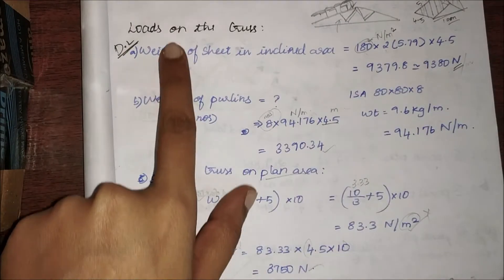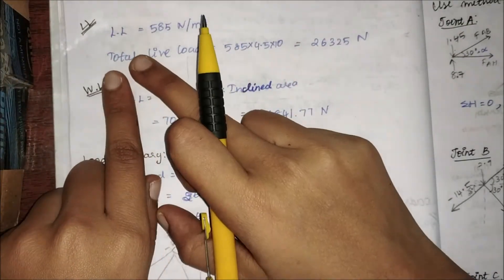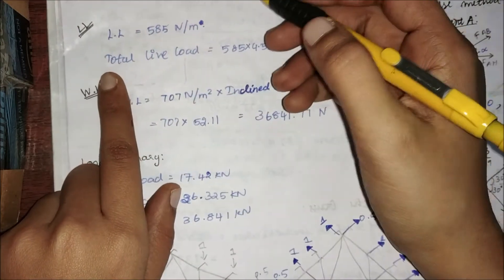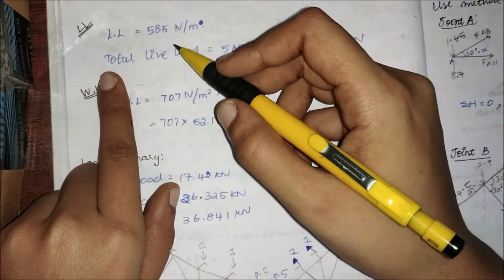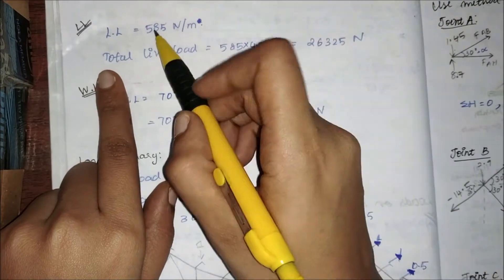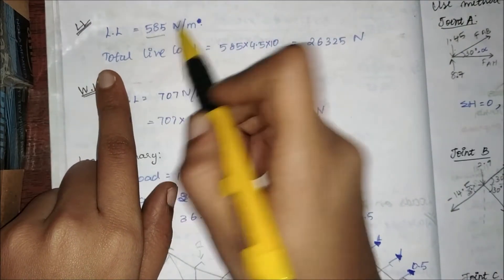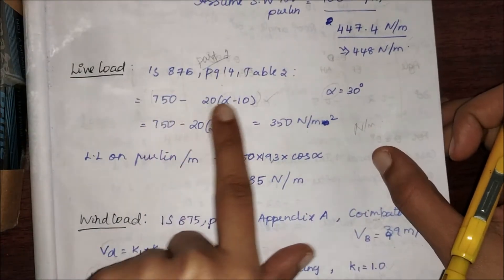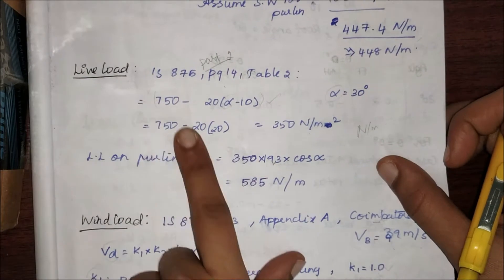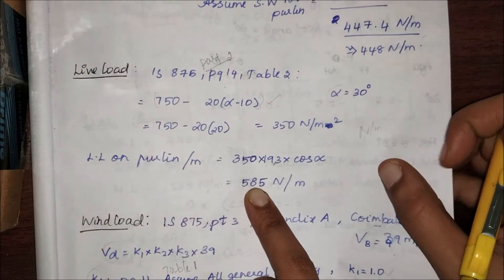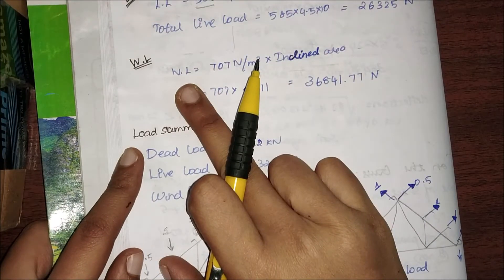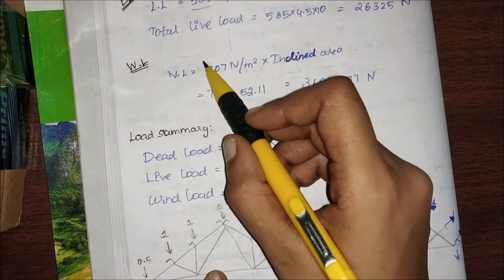In the previous video we found the dead load acting on the truss. Now let us come to the live load. We have already found what is the live load acting on the purlin — the same will be acting on the truss also. For the purlin we got 585 newton per meter. After all those formulas we found that the total live load acting is 585 newton per meter, so I'm going to take the same for my truss also.